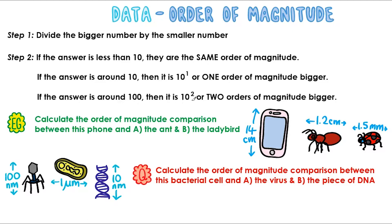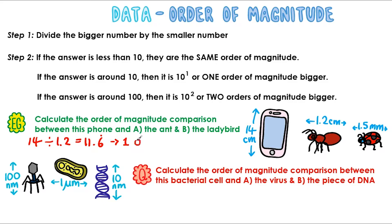If the answer is around 100, then it's 10 squared, or 2 orders of magnitude bigger, and so on. For this example, we are asked to calculate the order of magnitude comparison between this phone and the ant. We divide the bigger number by the smaller number, so we're going to do 14 divided by 1.2. If we work that out, we get 11.6 recurring. That number is pretty close to 10, so we can say this is 1 order of magnitude bigger — I'm going to shorten that to OOM, order of magnitude.